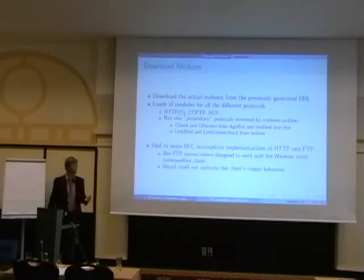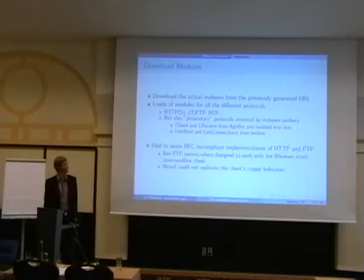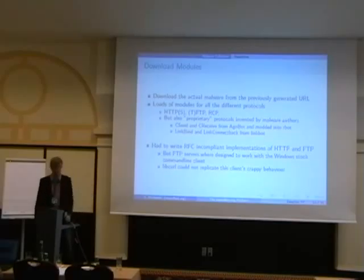For HTTP and FTP, we first used libcurl, which didn't work out all the time because we had to write RFC non-compliant implementations of these two protocols because the Windows implementations of these protocols were also RFC non-compliant. If you use the FTP stock command line client, it allows you to do things the normal FTP RFC doesn't allow you to do. The bots actually were just developed using these command line tools from Windows. I guess the bot coders never read any RFCs. We had to write some broken implementations that are as broken as the Windows implementation so they would actually work with the malware. We had to re-implement these protocols, which was tedious work. But we had to do it.